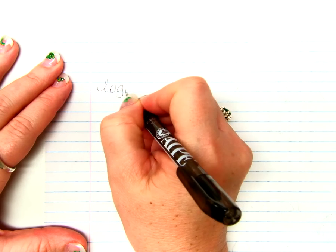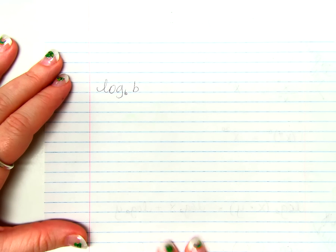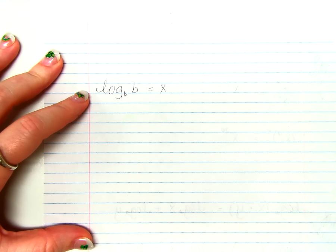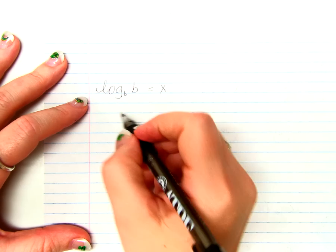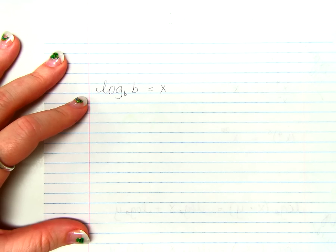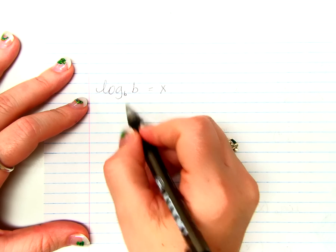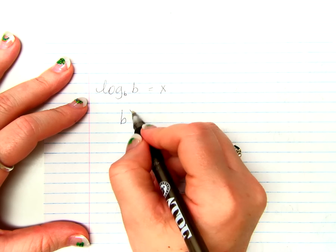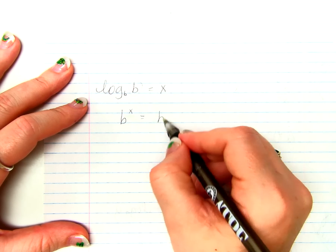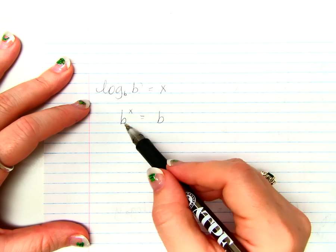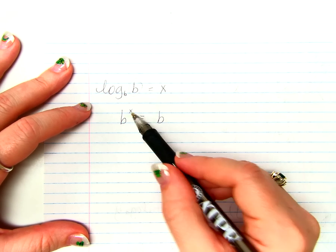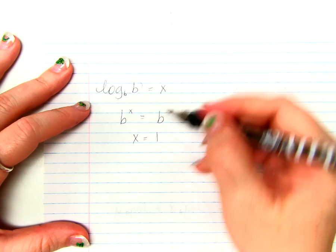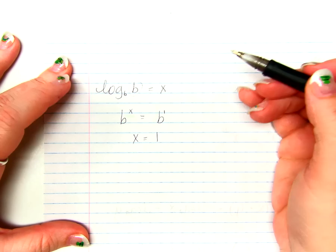Log base b of b. Log base b of b, what does that equal? We are going to just say for a moment, we are going to call that x. Well, if I took this and rewrote it in exponential form like we have been doing the last couple days, the base of the log would become the base of the exponent, the answer would become the exponent, and the argument is what it equals. Well, if b to the x equals b, what does x equal? I hope it's obvious that x equals 1, because there is an exponent of 1 on this number, isn't there.